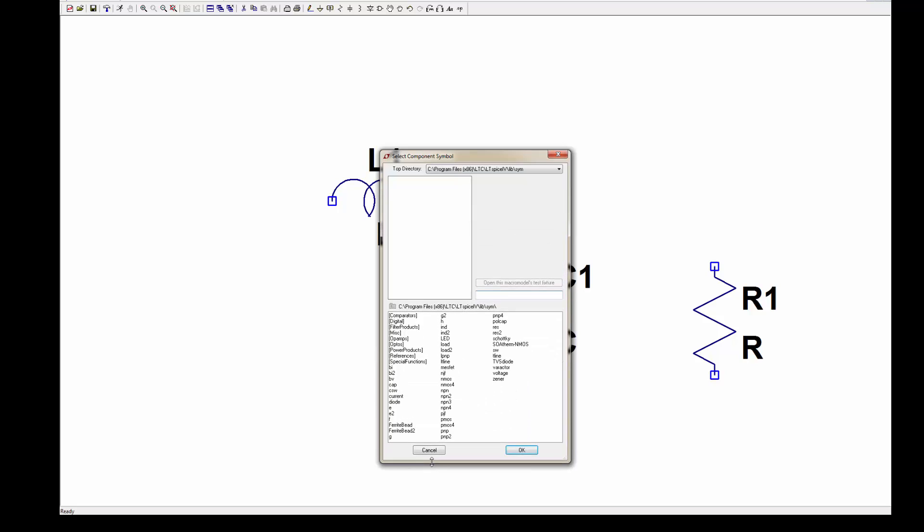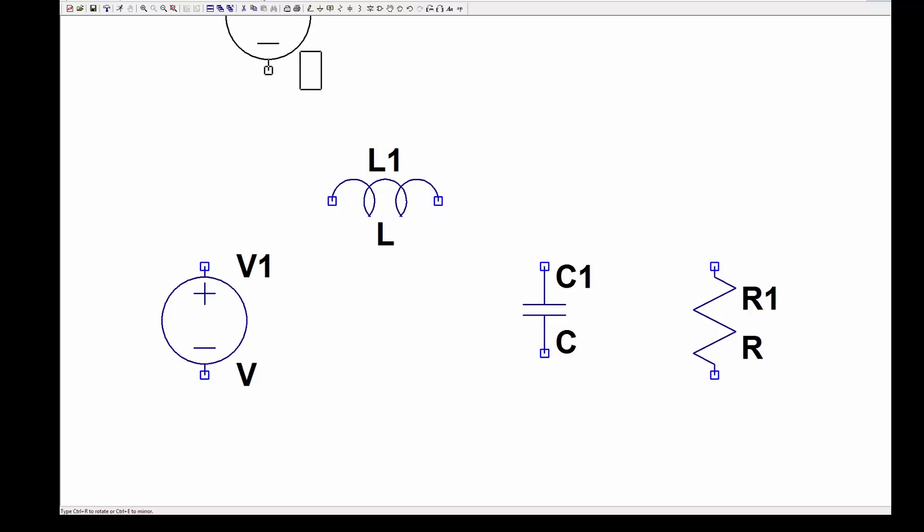We start bringing in the inductor, and you can rotate it so it's up, and then we get rid of the inductor, and we're going to bring in a capacitor. So we bring in the capacitor, we bring in a load resistor, and there we have it, and then we're going to have to bring in a source. And the source here would be a voltage source.